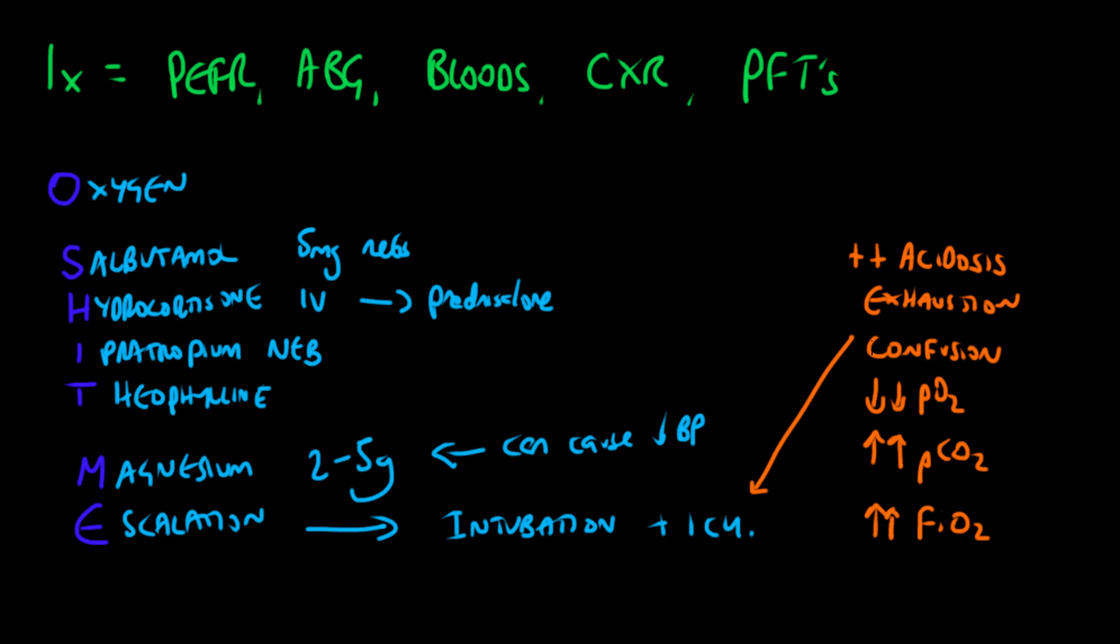Things that might precipitate admission to intensive care in the asthmatic include worsening acidosis, patients becoming exhausted and tired with CO2 building up, confusion with dropping GCS, and a reduction in PO2—that's hypoxia.